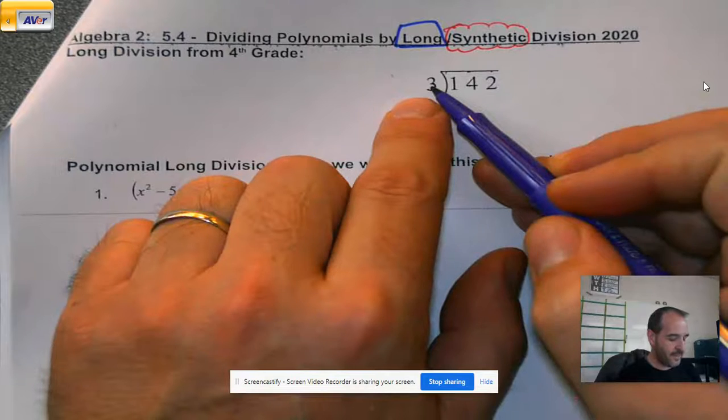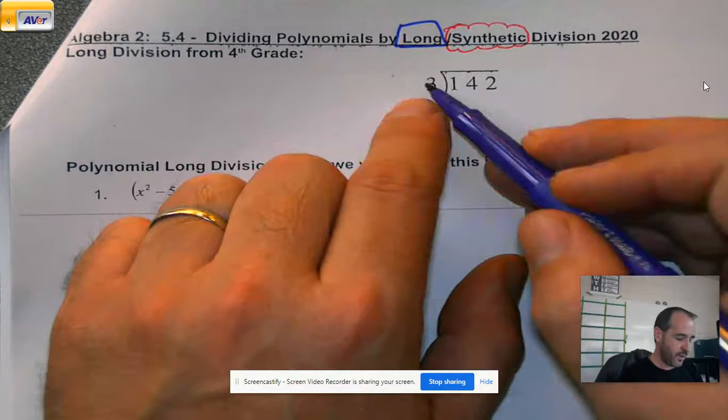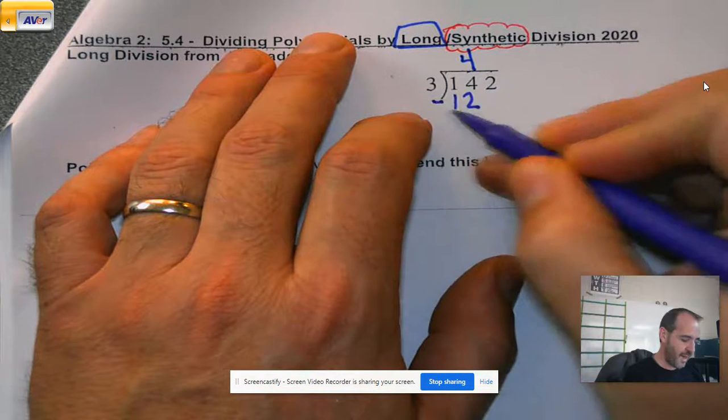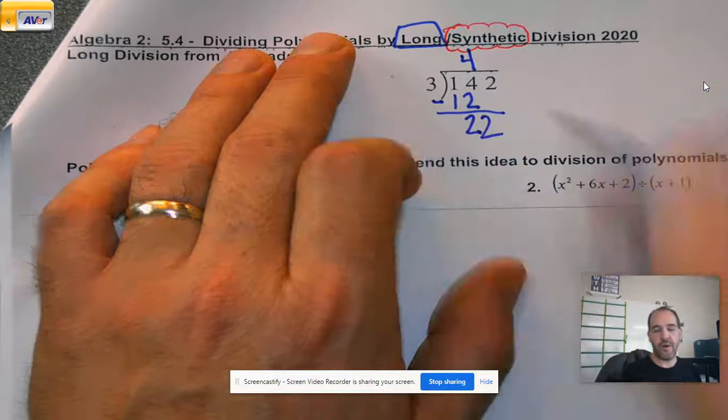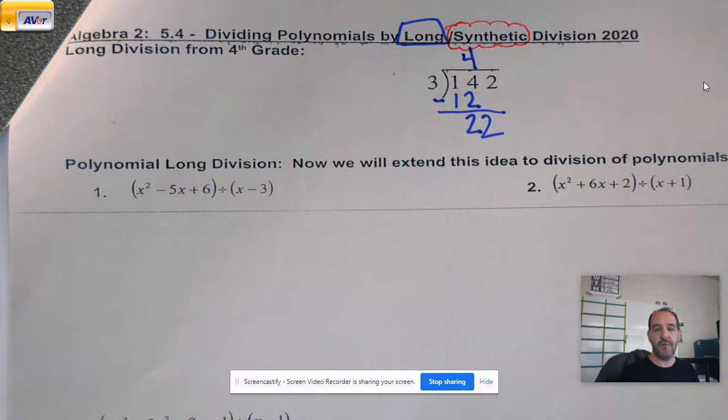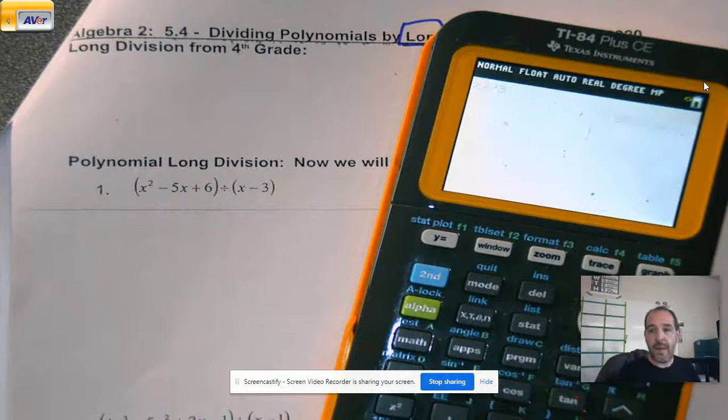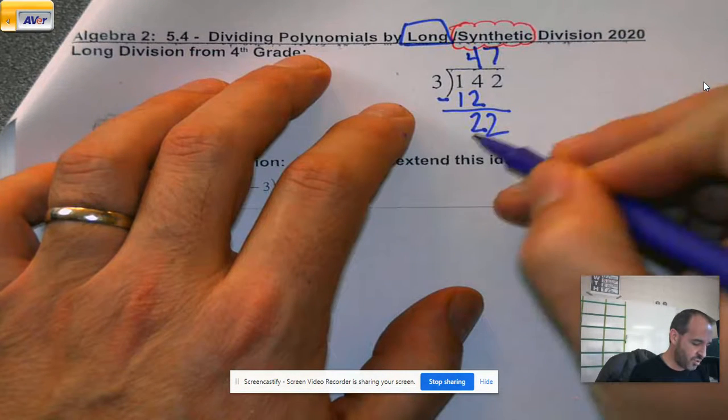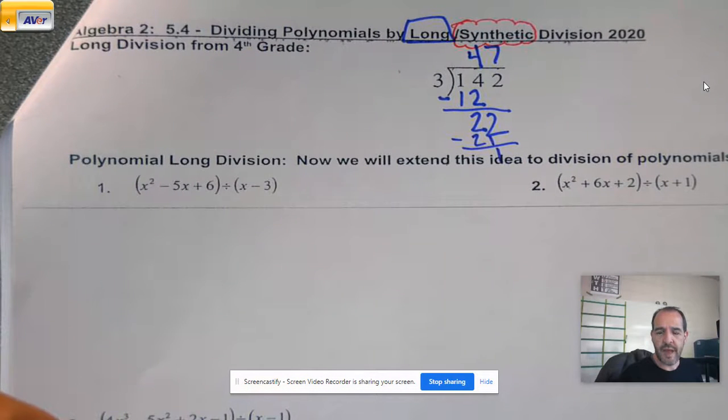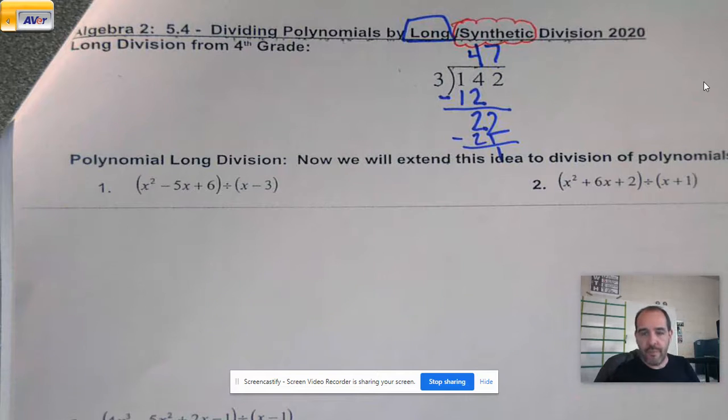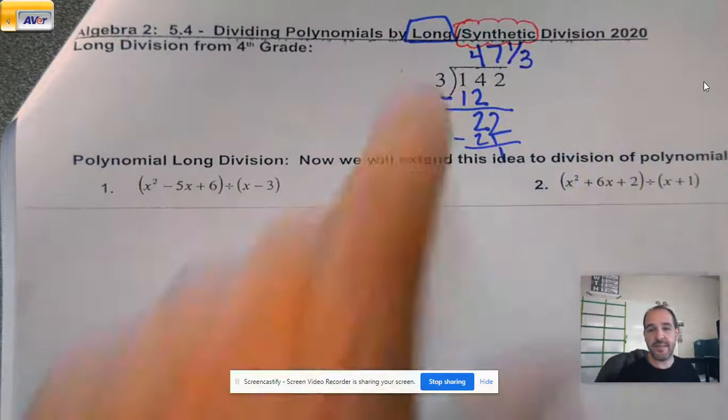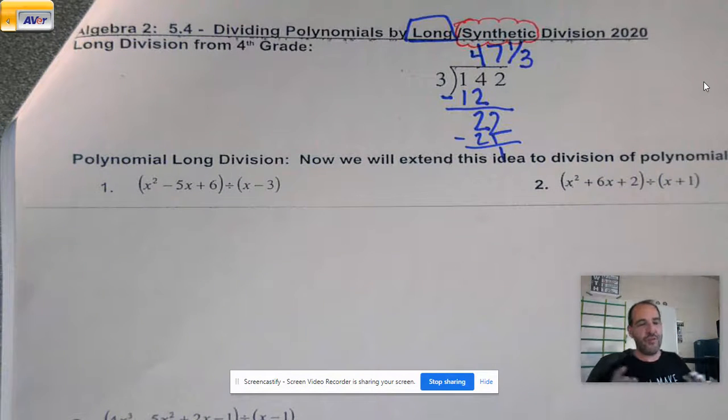So reminder in case it's been a while. When we do division, we're looking to see how many times this number goes into this number. 3 doesn't go into 1 because 3 is bigger than 1. 3 go into 14? Yeah. 4 times. 3 times 4 is 12. And we subtract that. Pull down our next number and we start again. What if I don't know how many times 3 goes into 22? Just pop it in the calculator and whatever the whole number part is, that's how many times it goes in evenly. So it goes in 7. 7 times 3 is 21. And we get a 1.